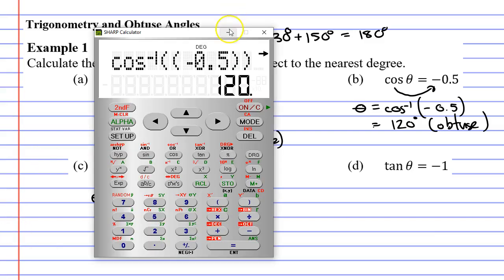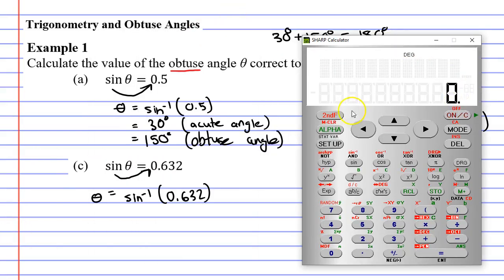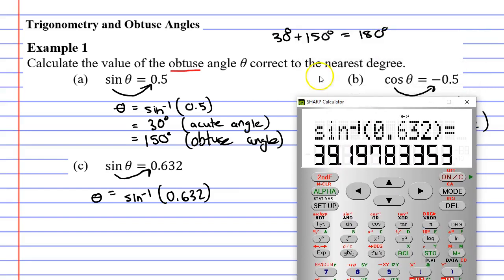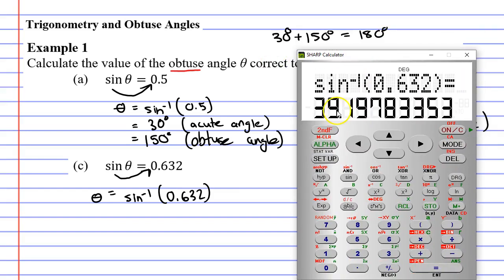Bringing up our calculator what do we get? Second function sin bracket 0.632 close our brackets equals and we get 39.19 degrees. Now it wanted it correct to the nearest degree so we would just keep this as 39 degrees.